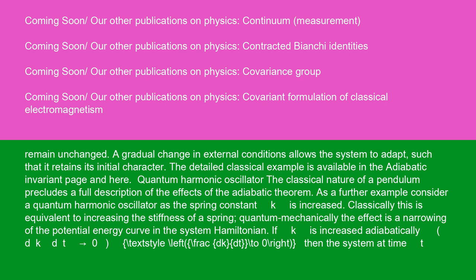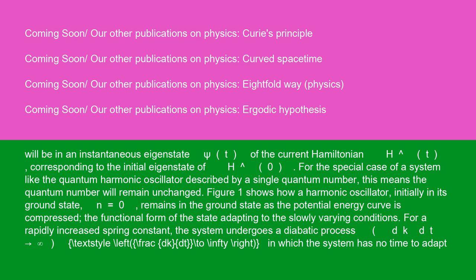Quantum harmonic oscillator: the classical nature of a pendulum precludes a full description of the effects of the adiabatic theorem. As a further example, consider a quantum harmonic oscillator as the spring constant k is increased. Classically, this is equivalent to increasing the stiffness of a spring. Quantum mechanically, the effect is a narrowing of the potential energy curve in the system Hamiltonian. If k is increased adiabatically (dk/dt → 0), then the system at time t will be in an instantaneous eigenstate of the current Hamiltonian H-hat(t) corresponding to the initial eigenstate of H-hat(0). For the special case described by a single quantum number, this means the quantum number will remain unchanged. Figure 1 shows how a harmonic oscillator, initially in its ground state n=0, remains in the ground state as the potential energy curve is compressed, with the functional form of the state adapting to the slowly varying conditions.